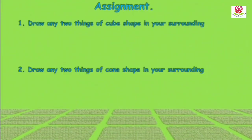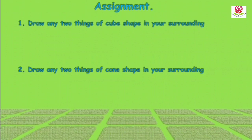Here is an assignment or homework for you. Number 1: Draw any two things of cube shape in your surrounding — draw any two real-life objects that look like a cube, name it and colour it. Number 2: Draw any two things of cone shape in your surrounding — draw any two real-life objects that look like a cone, name it and colour it.